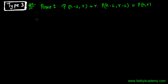We're learning to solve questions from permutation mathematics, and this is Type 3, a proving question. Let me read the question: permutation of n minus 1 objects taken r at a time, plus r times permutation of n minus 1 objects taken r minus 1 at a time, equals permutation of n objects taken r at a time. Let's solve from the left hand side.